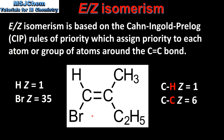On the left carbon atom we assigned bromine as the highest priority as it has the highest atomic number. On the right carbon atom we assign the C₂H₅ group as the highest priority as it is the longest hydrocarbon chain. Next we look at how to distinguish between the E and Z isomers.